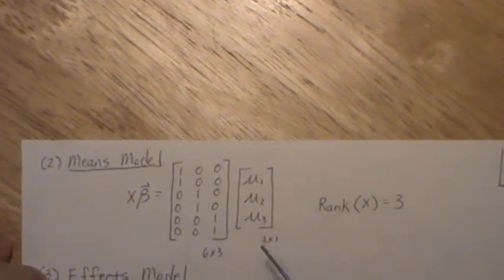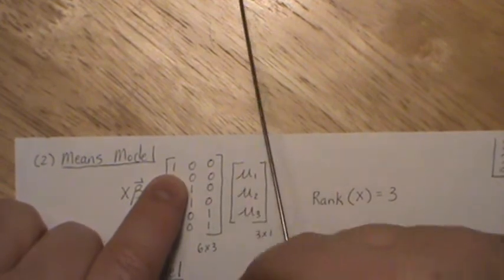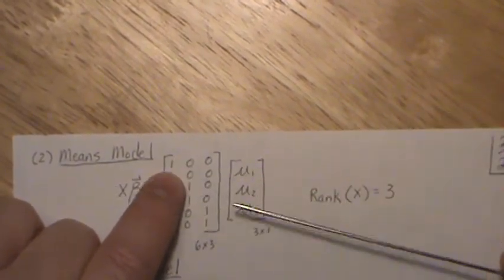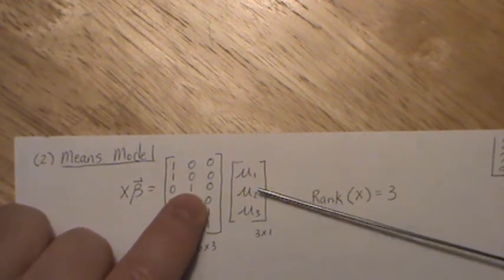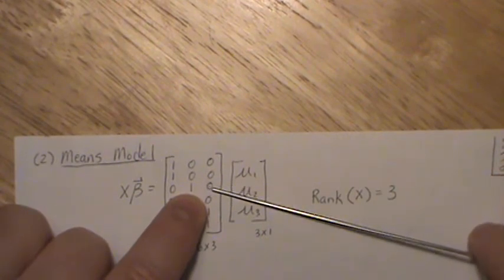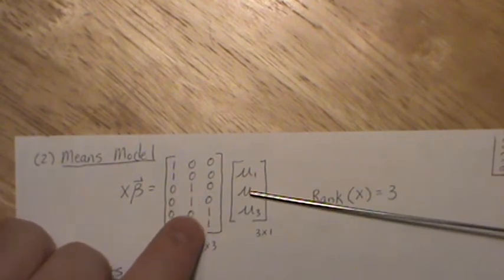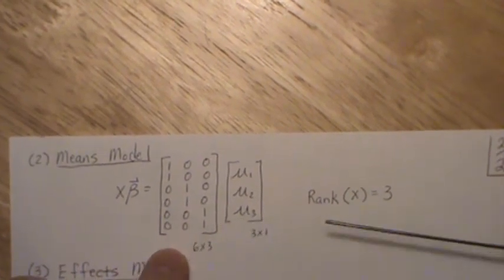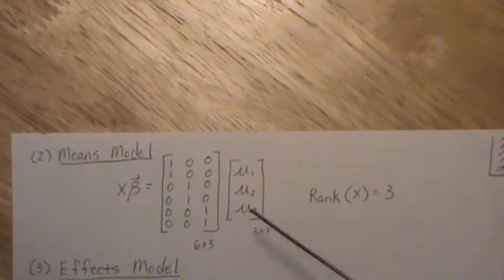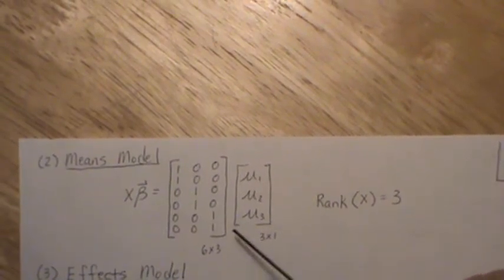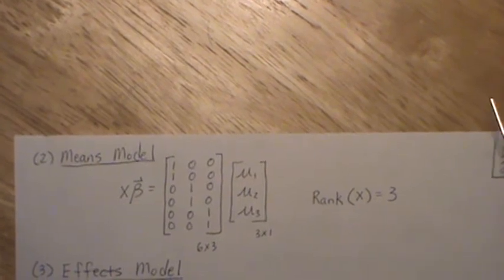So the means model is this. And so for observation 1 in treatment A, when we multiply this up, we get it's just this mean, the same, because we're still in treatment A. And then when this observation goes to group B or group 2, then this multiplication isolates this. And then when we get to C, it isolates this. Now, these are the unknown parameters, the group means. And that's why it's a means model. So each one of these represents the group mean. But look at the design matrix. This is a rank 3 matrix.